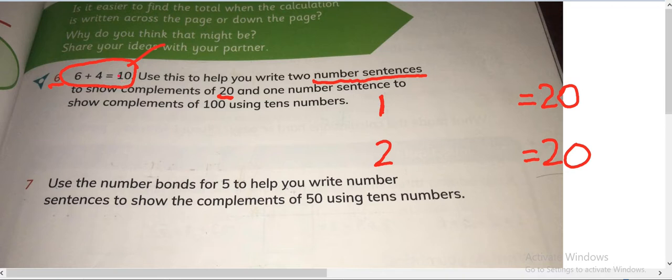How will you use it? 6 plus 4 is 10, you need to make it 20. You will make it as 16 plus 4 is equals to 20, or you can write it as 6 plus 14 is equals to 20.